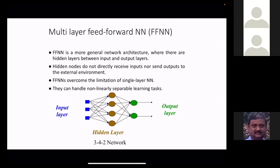For every combination of weight values there will be a mean square error, because the predicted output changes with the weight values. You find the difference between the desired output and the predicted output, square it, and take the mean. The difference between output and the desired value is called an error or a loss. For every combination of weights you can compute an error value.